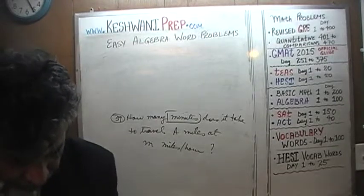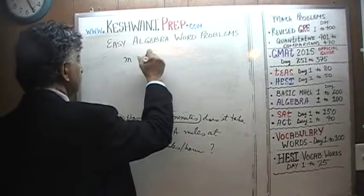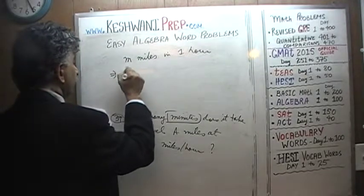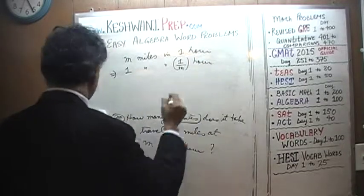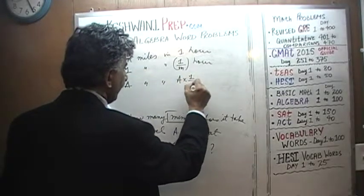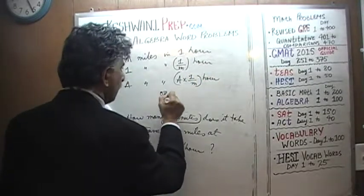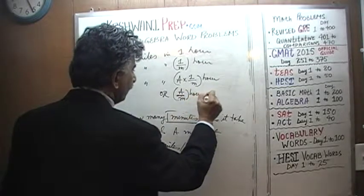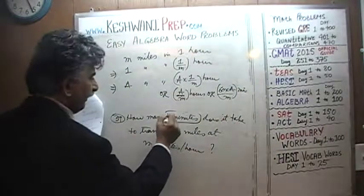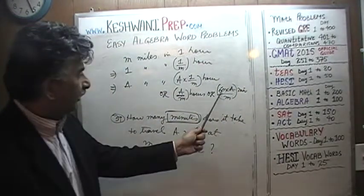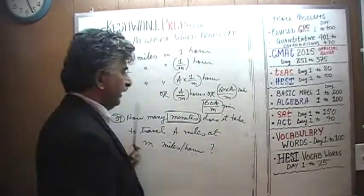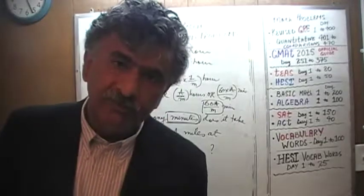Same logic: we are going M miles in one hour, which implies we go one mile in one over M hours. We want to go A miles, so that implies A miles should take A times one over M hours, or A over M hours. Multiplying by 60 to convert to minutes: 60 times A over M, or 60A over M minutes. The answer is 60A over M minutes.